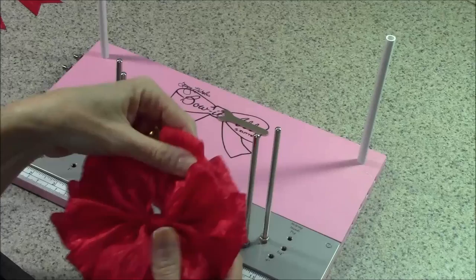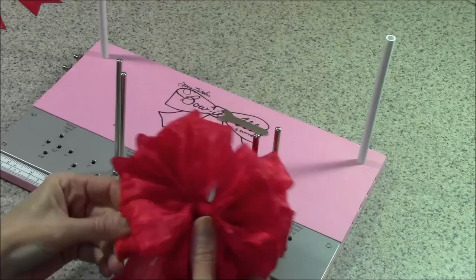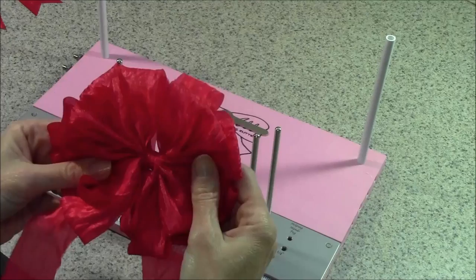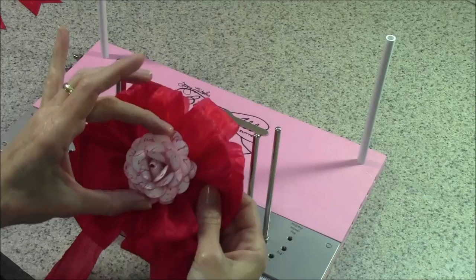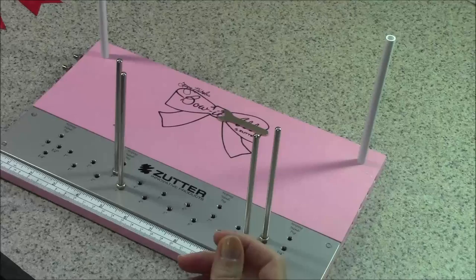And there's your loopy bow. This is a really easy ribbon to work with - it basically fluffs itself. There's not a lot that you have to do when it comes off because it just pops right open. So you can either use it like that or put something in the center, whatever embellishment of your choice. So that's the first quick and easy one.